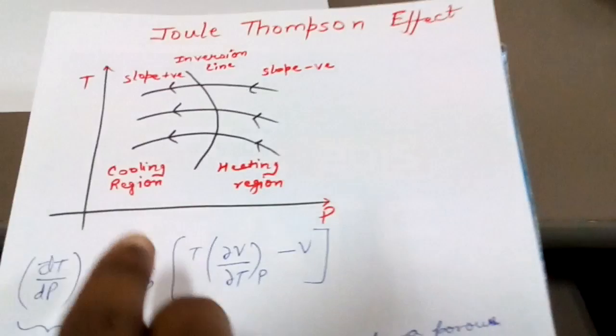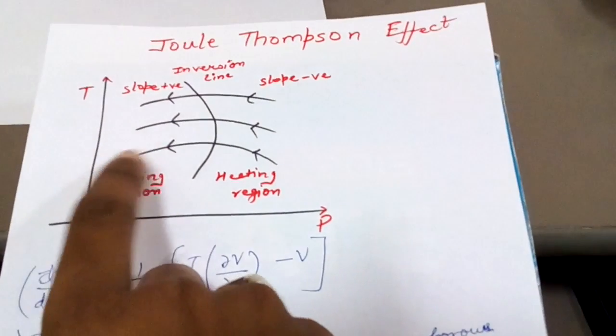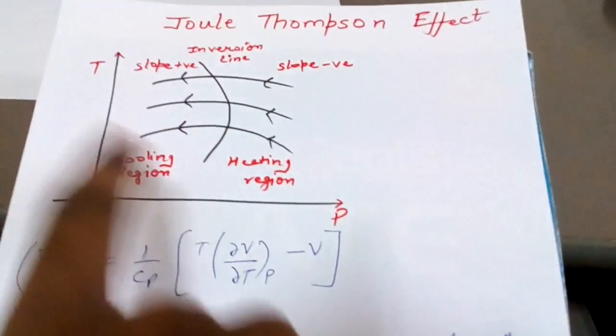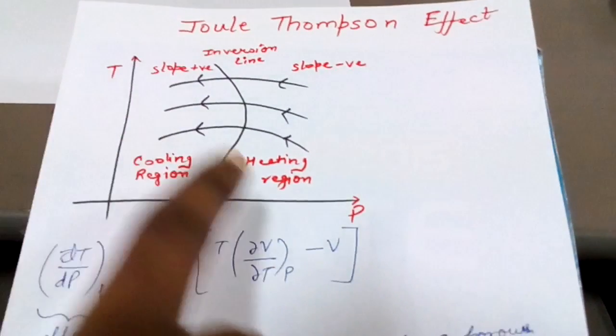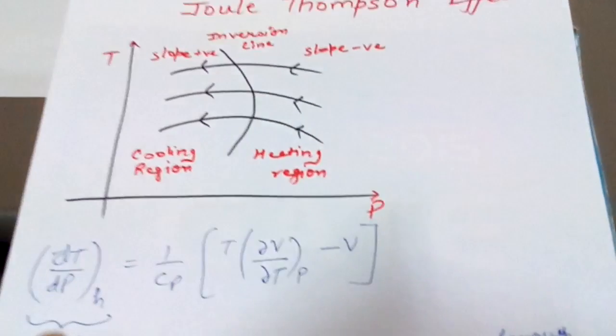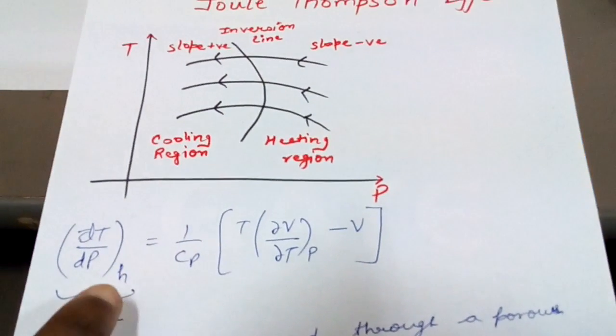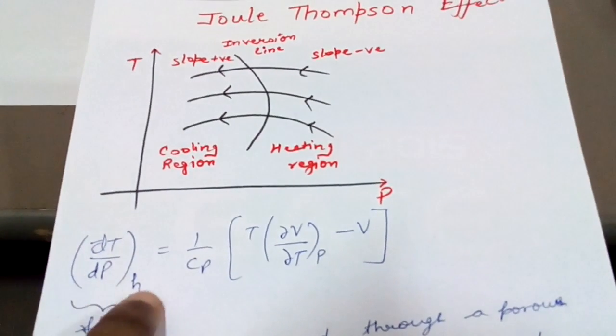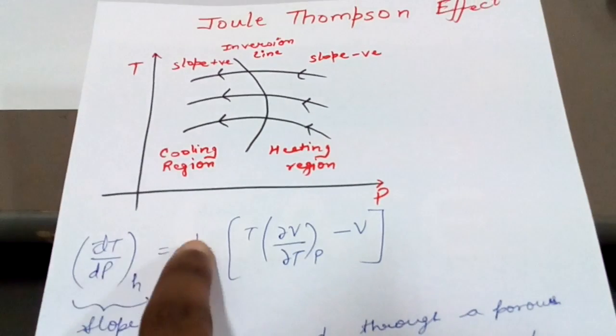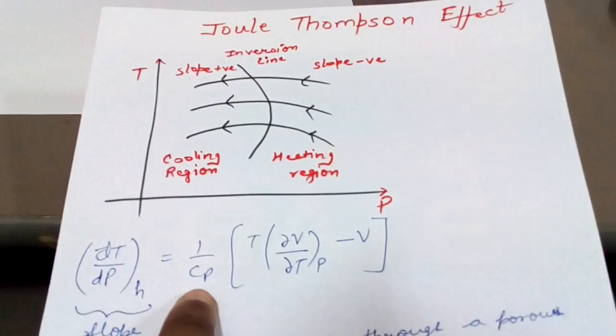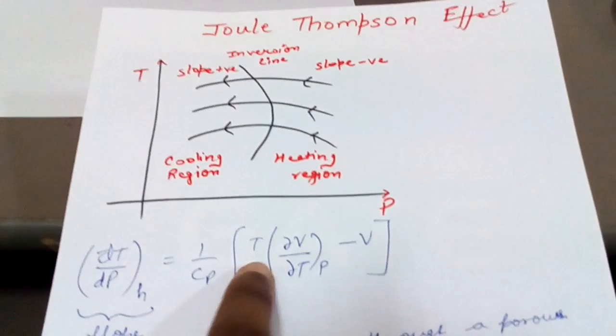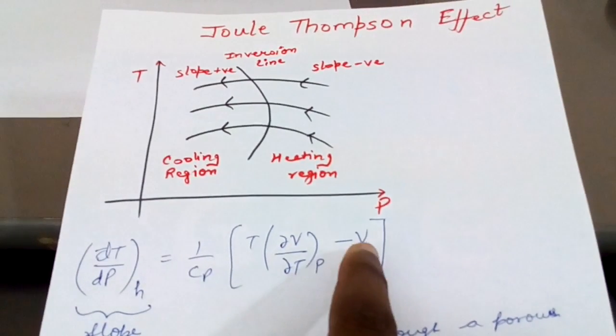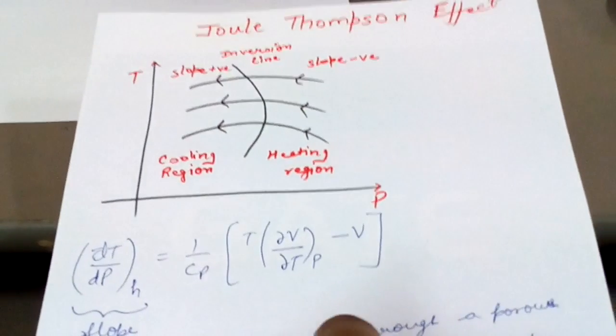The slope of this T-P diagram, that is dT upon dP, remember it is at constant enthalpy or isenthalpic process. dT upon dP at constant enthalpy is equal to 1 upon Cp, that is specific heat at constant pressure, into bracket T del V upon del T at constant pressure minus volume V. So this is the slope.